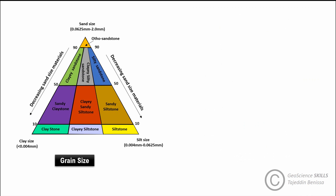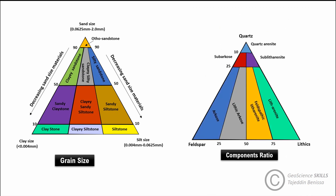Clastic rock classification is based on grain size as well as component ratios. Whenever grain size decreases, the lithology changes from sandstone to finer materials such as siltstone and claystone. Particle size has an impact on reservoir quality — moving from fine materials toward coarser materials corresponds to higher potential for good reservoir quality.